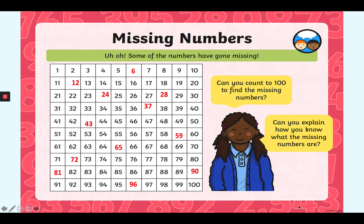So can you explain how you know what the missing numbers are? Well you should have been able to tell by looking at the number before. So for example 5 is before 6 and the number after. So 7 is after 6.